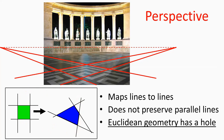If we start searching for such a formula, we soon realize there is a problem with the geometry itself, because in Euclidean geometry parallel lines do not intersect. So if we need a transformation that maps two parallel lines to two intersecting lines, the intersection point should be generated out of nothing. A mathematical function is not able to create something out of nothing, so this situation cannot be handled precisely in Euclidean geometry. We often say that Euclidean geometry has a singularity for parallel lines.